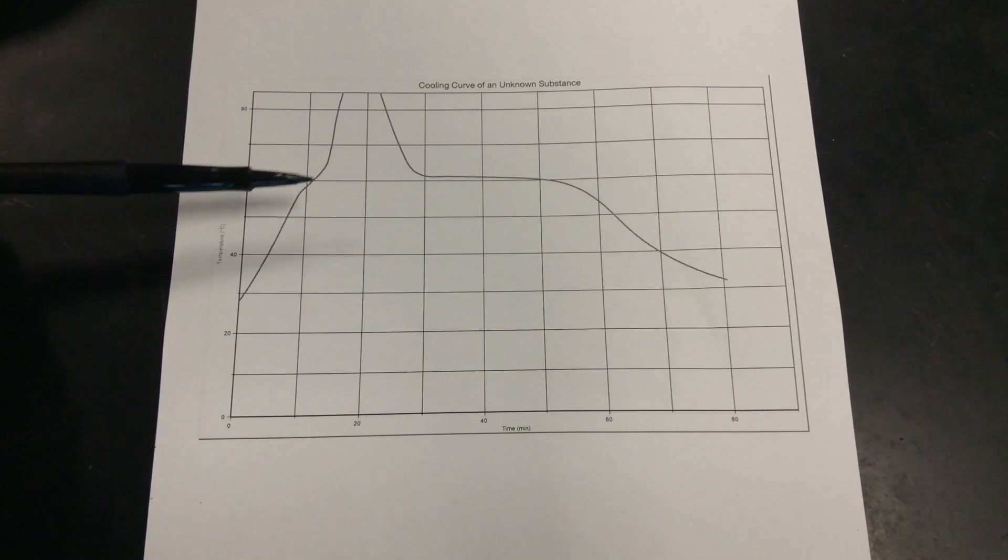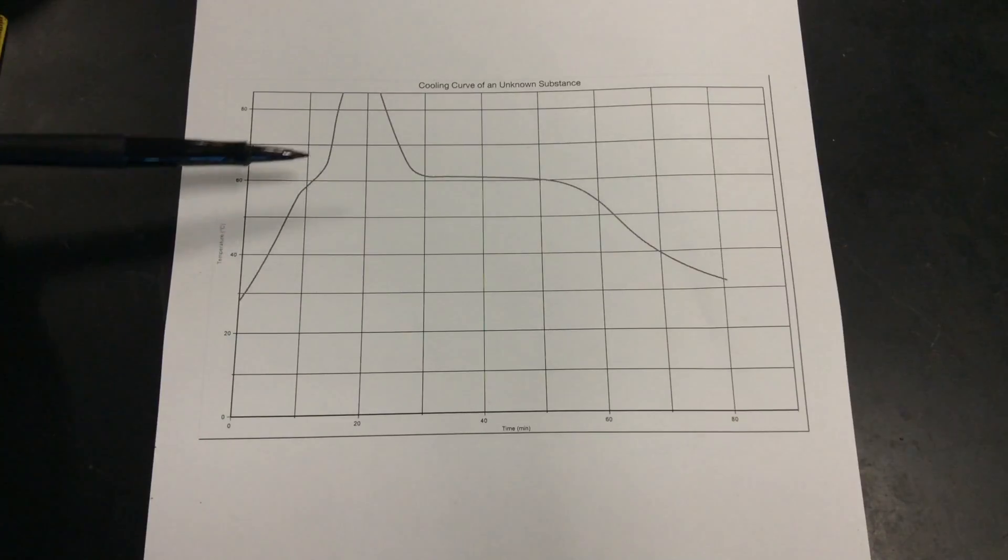We can't really get a value for where it is the most flat lining or where the kinetic energy is the most constant because there was too much energy being absorbed too quickly by the thermometer. Too much heat there. It just wasn't sensitive enough.